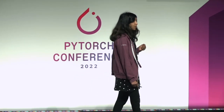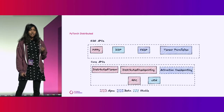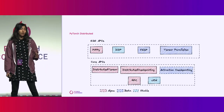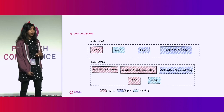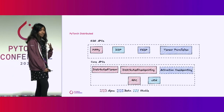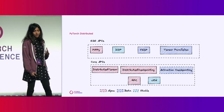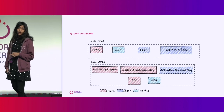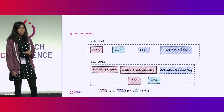We can think of PyTorch Distributed APIs in the following format. We have high-level end-to-end APIs that provide data parallelism like FSDP and DDP, APIs that provide pipeline parallelism like PiPPy, and Tensor Parallelism APIs. These end-to-end APIs are powered by core APIs like Distributed Tensor, Distributed Checkpointing, Activation Checkpointing, and Collective APIs like C10D.